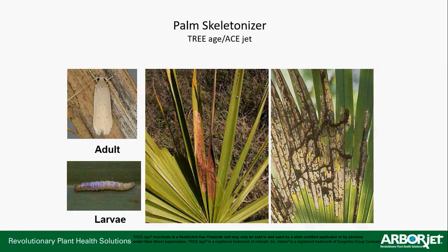Now we'll get into some insect pests. I like to group pests by how they feed on or damage the plant. Palm leaf skeletonizer is an insect we're seeing a lot of. When I first came down here I was told it was more of a cosmetic insect, but looking at a Washingtonia with that much damage to active tissue, it really puts a lot of stress on the plant and over time can predispose it to other issues that could kill the palm.